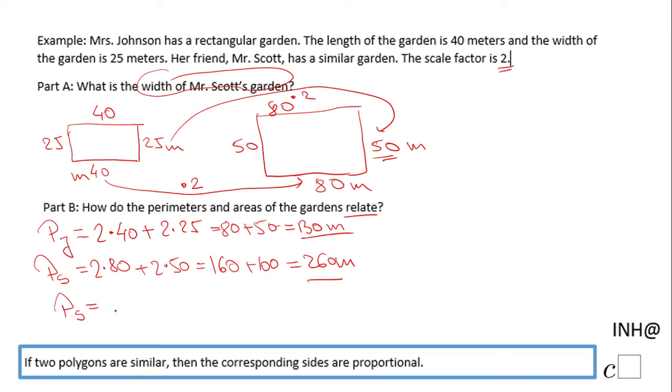If you notice, it's twice, 2 times larger than the perimeter of Miss Johnson. Why twice? Why two times? Because you see, the scale factor here is 2.